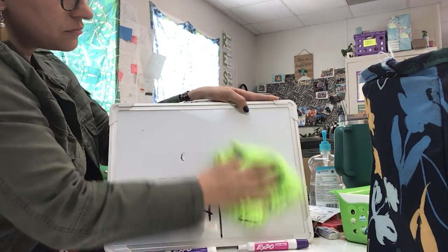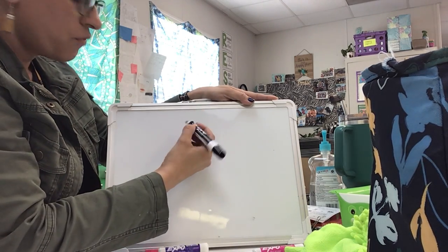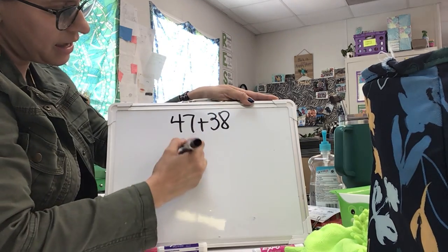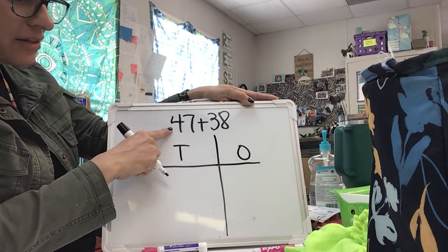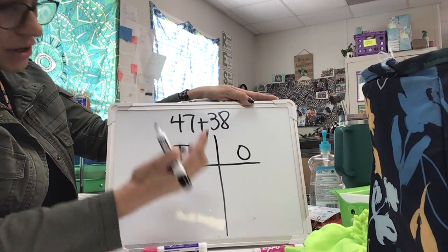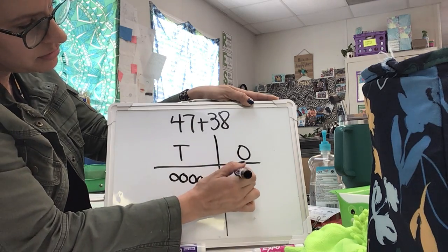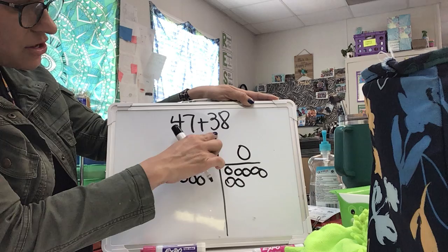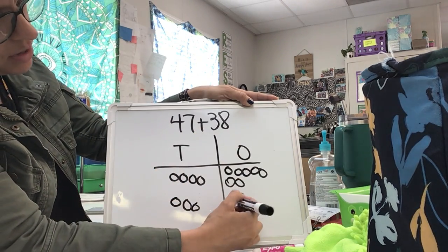Let's look at another one. 47 plus 38. And again, I'm doing my T and my O that stands for tens and ones. When I look at 47, I notice that there's a 4 in my tens place and 7 in my ones. The number 38 has 3 in the tens and 8 in the ones.